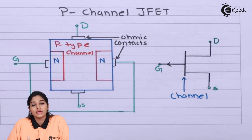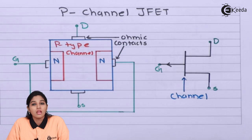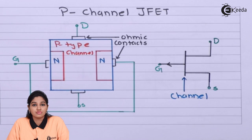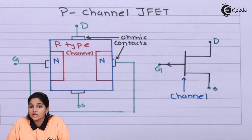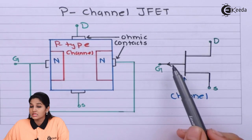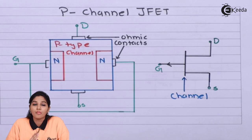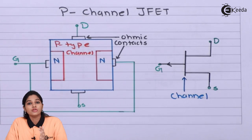Ohmic contacts are made on both sides of the P-type semiconducting bar to form the drain and source terminals. Since the semiconducting bar is P-type, whatever current flows through the JFET is due to the majority carrier, making it a unipolar device. In the symbol of P-channel JFET, the vertical line represents the channel, but the arrowhead on the gate points opposite to the channel — unlike N-channel JFET where the arrowhead points towards the channel.